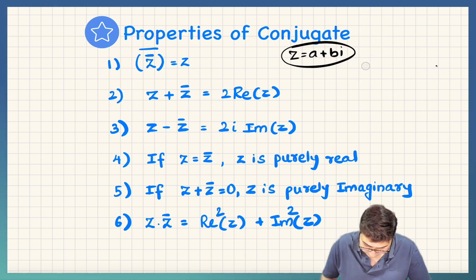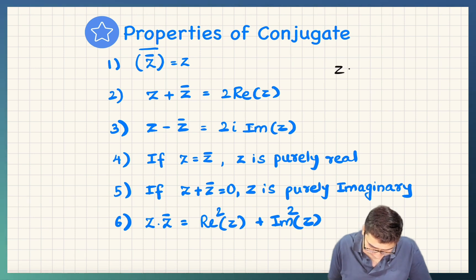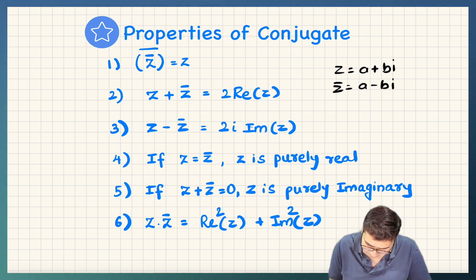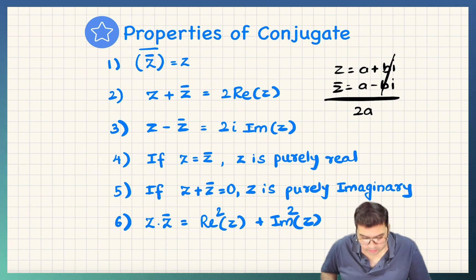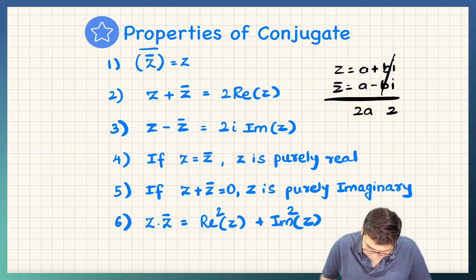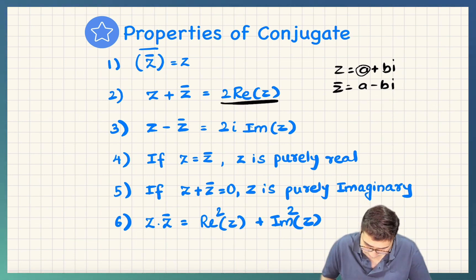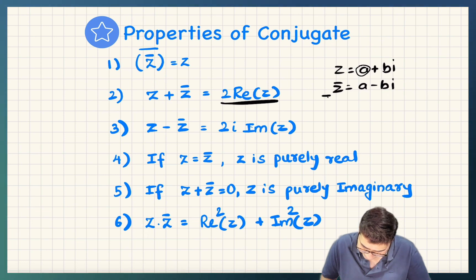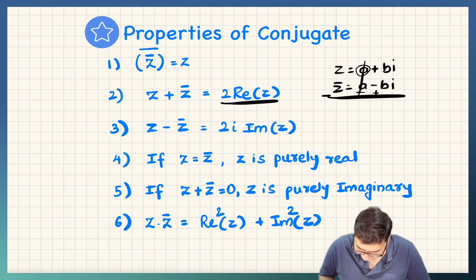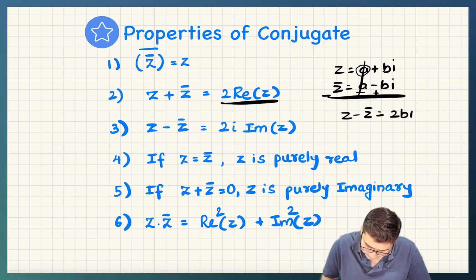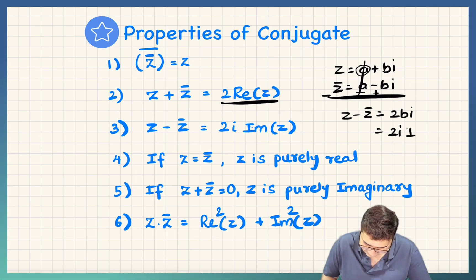Moving on to the next properties: if z equals a plus bi and z-bar equals a minus bi, adding them gives 2a. So z plus z-bar is always twice the real part of z. And if you take z minus z-bar, the real part cancels and you get 2bi, which is twice i times the imaginary part of z. So z minus z-bar equals 2i times Im(z).